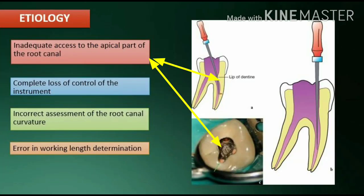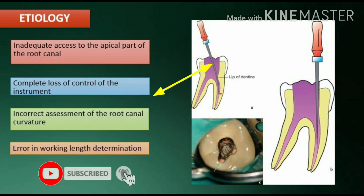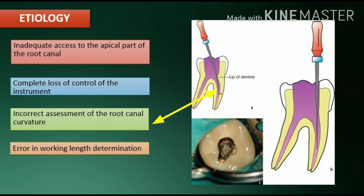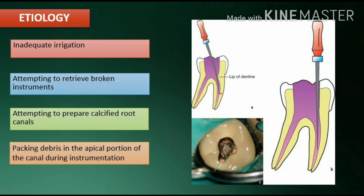Etiology: inadequate access to the apical part of the root canal, complete loss of control of the instrument, incorrect assessment of the root canal curvature, error in working length determination, and inadequate irrigation.